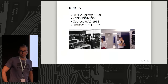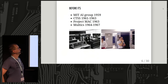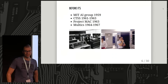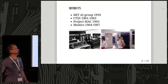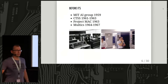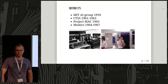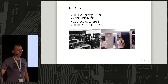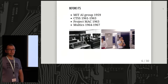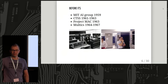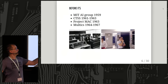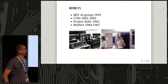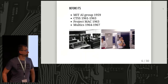To paint a picture of the landscape right before ITS was made: there was an AI group formed in the late 50s at MIT, where AI research began. There was the Compatible Time Sharing System (CTSS) for an IBM computer in the early 60s, one of the earliest time sharing experiments. Then Project MAC was formed at MIT in the mid-60s, involving both time sharing and development of Multics, and also supporting AI research.